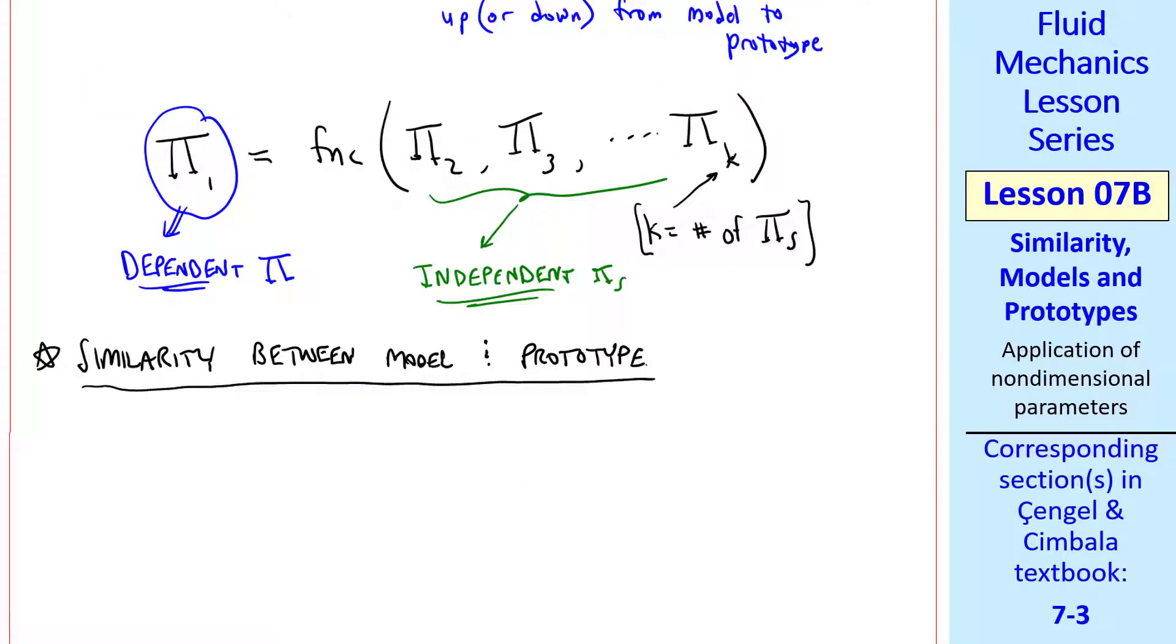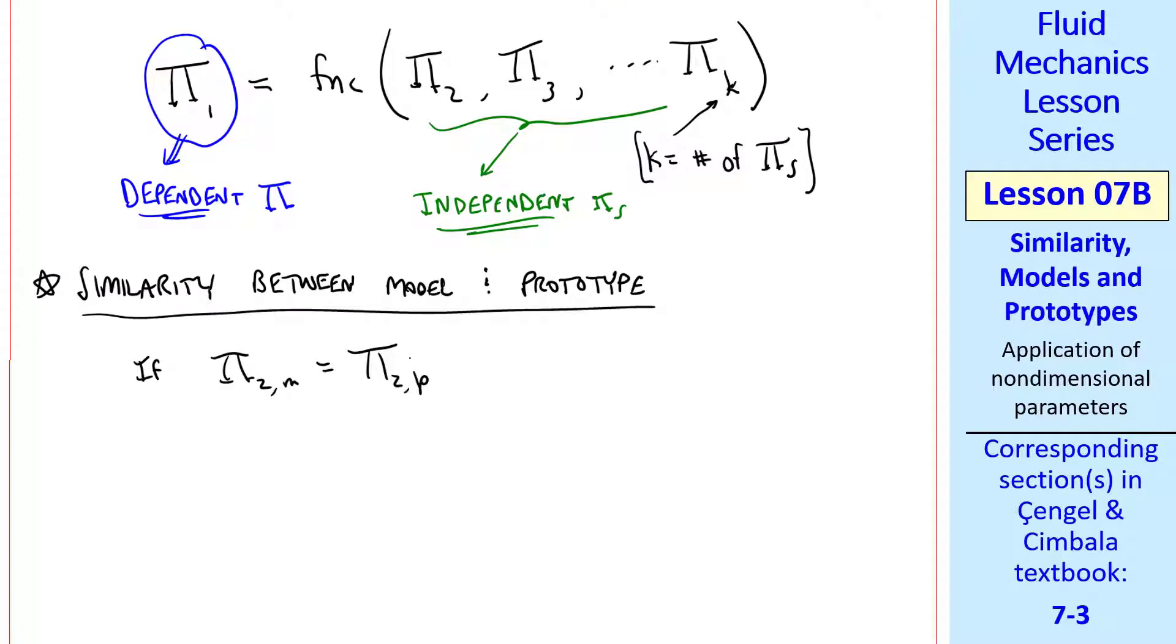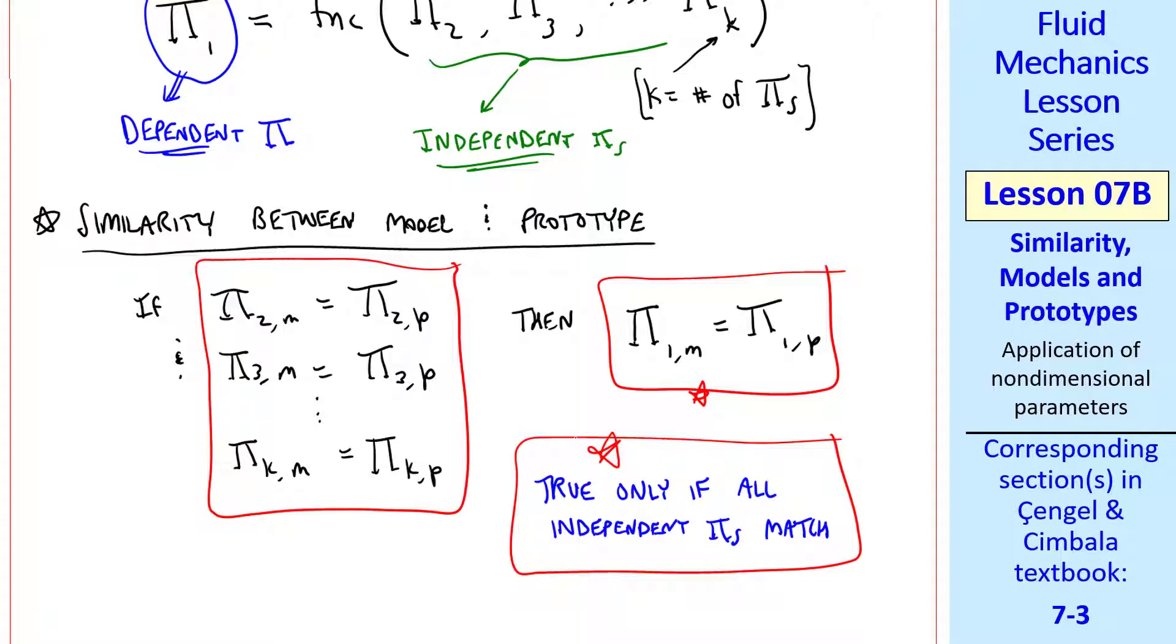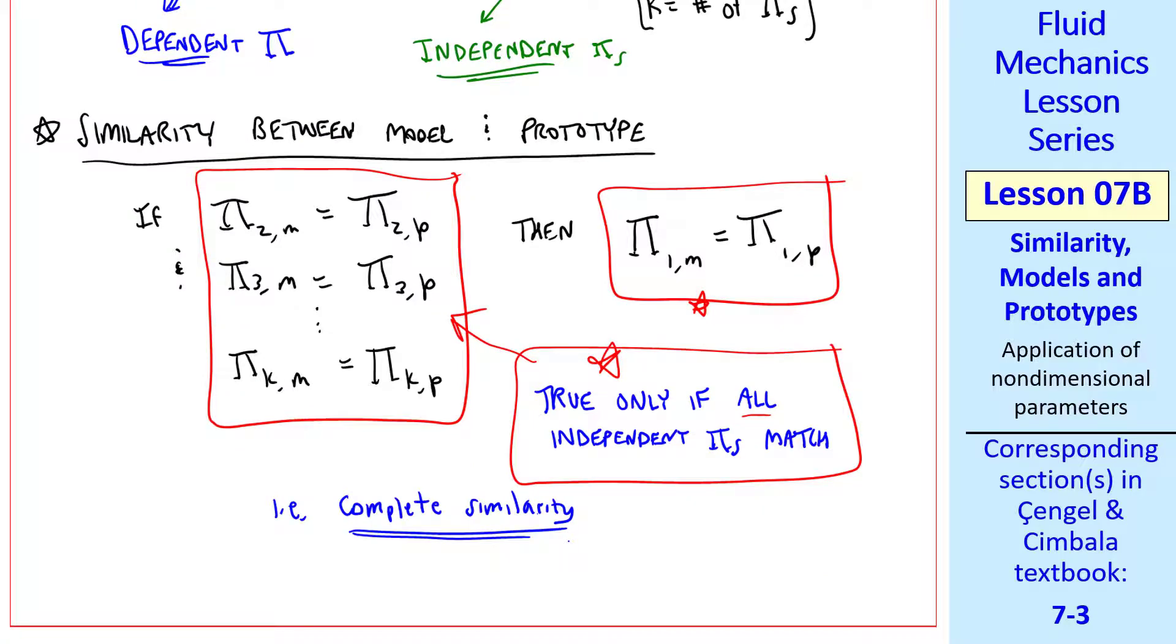Here's what we mean by similarity between a model and a prototype. If pi 2 of the model equal pi 2 of the prototype, and pi 3 of the model equal pi 3 of the prototype, etc., for all of the independent pi's, then we can be assured that pi 1 of the model equal pi 1 of the prototype. In other words, if all of the independent pi's match between model and prototype, then so does the dependent pi. Keep in mind that this is true only if all the independent pi's match, since this makes up our if-then statement. In other words, we have complete similarity.